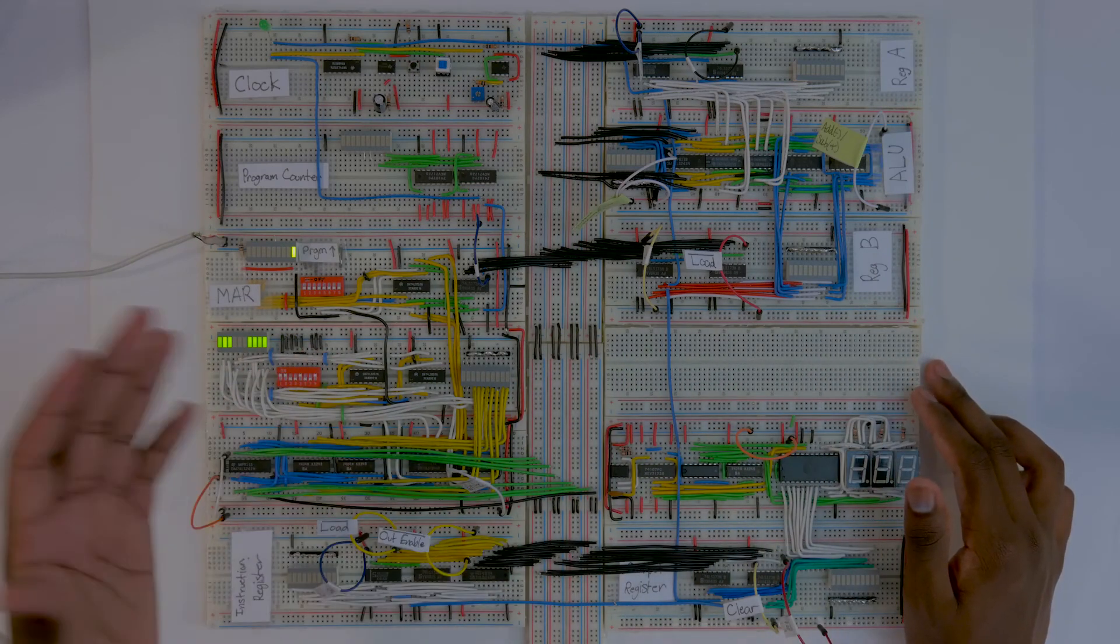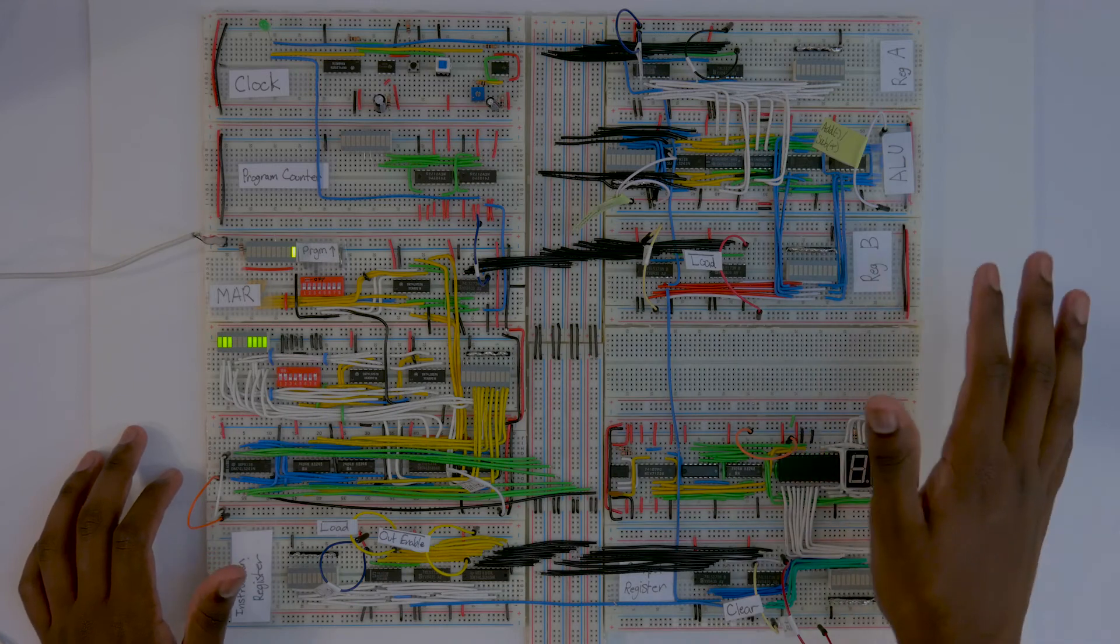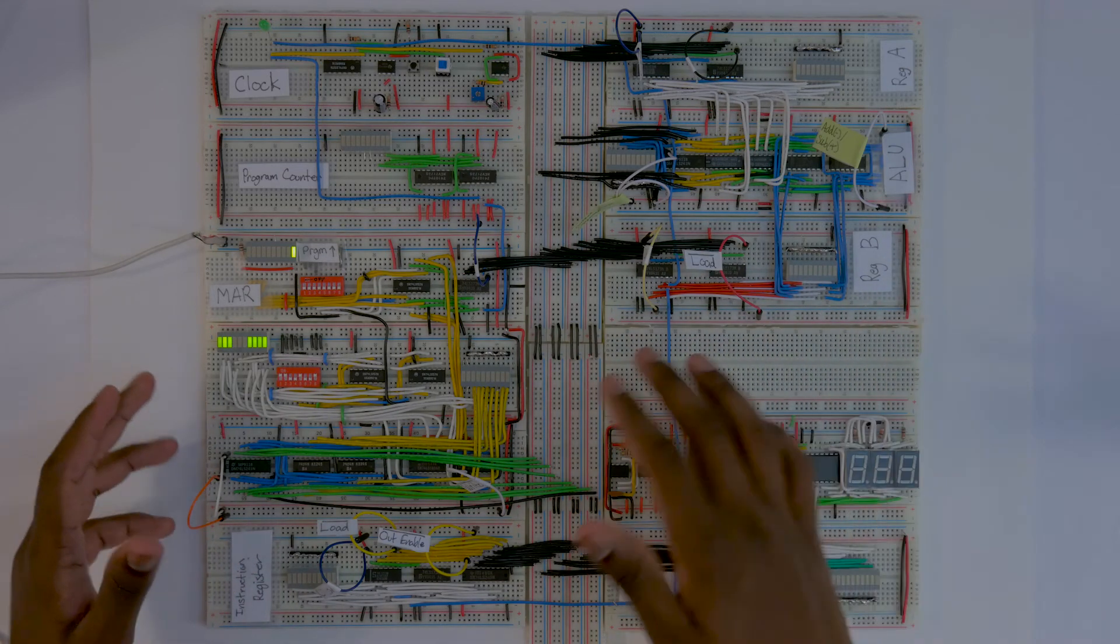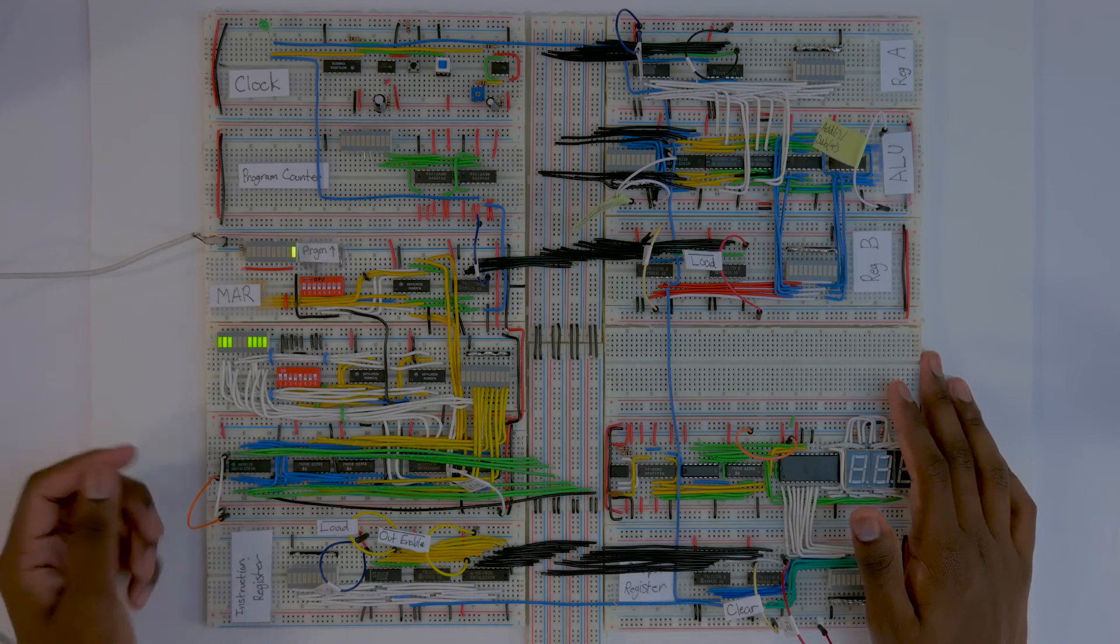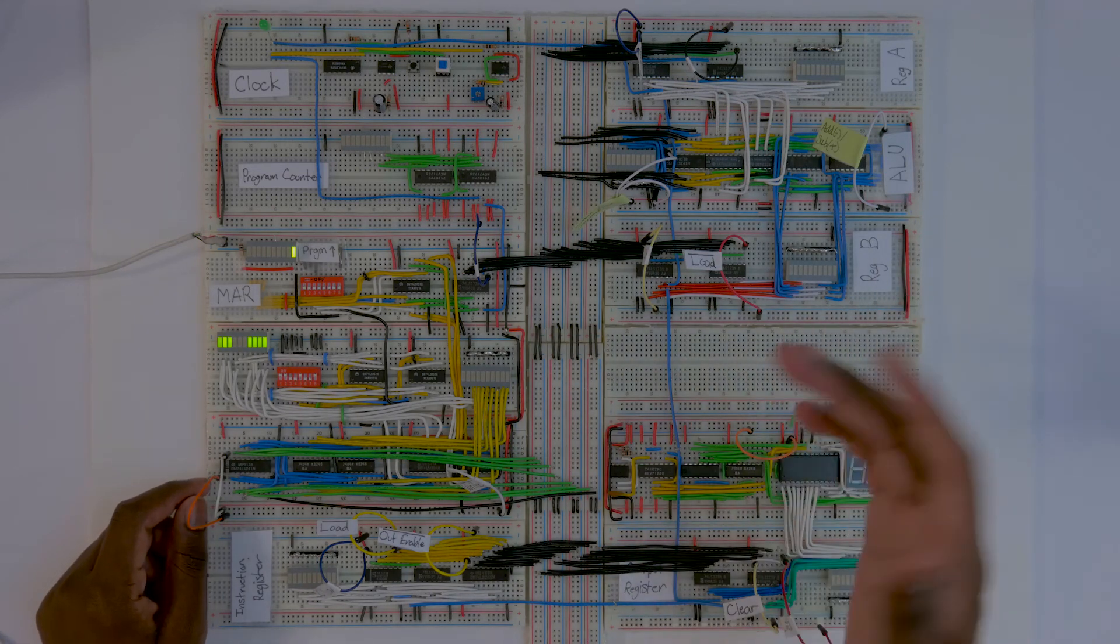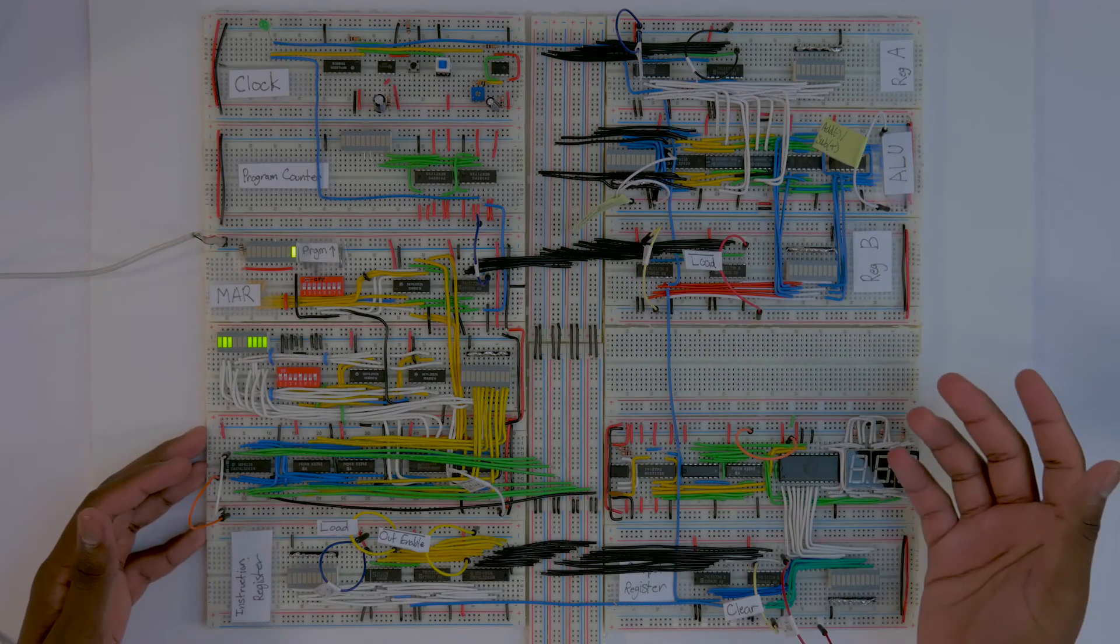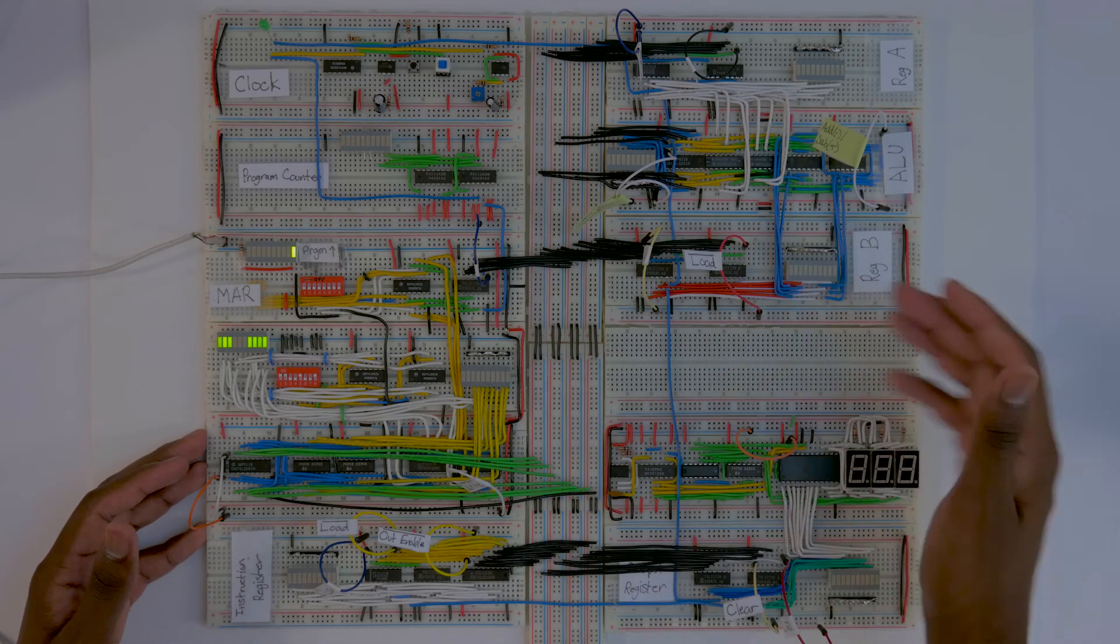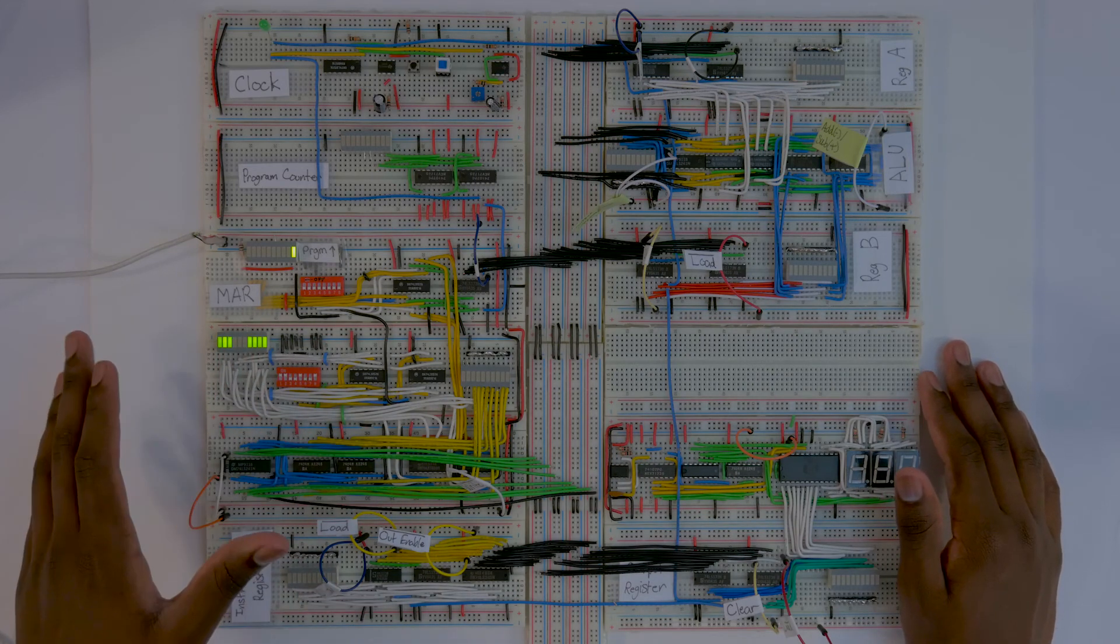And I've heard reports where if you connect this many breadboards together, the power distribution gets really messed up and it doesn't work so well. Now I have a 10 watt power supply, which is running at 5 volts, so that gives us 2 amps, which should be more than enough for the CPU. So I don't know what kind of issues we're going to have. I'm just going to connect them in the easiest way possible, and if we have issues, then I'm just going to troubleshoot those later.